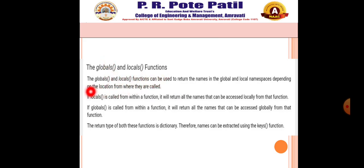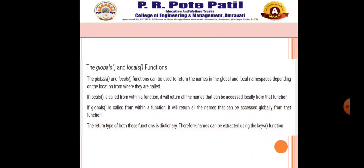The globals() and locals() functions can be used to return the names in the global and local namespaces depending on the location from where they are called. If locals() is called from within a function, it returns all names that can be accessed locally from that function. If globals() is used inside a function, all global names and attributes will be accessed. The return type of both functions is a dictionary, so names can be extracted using the keys() function.